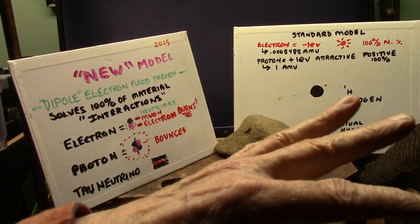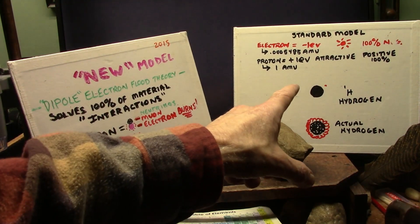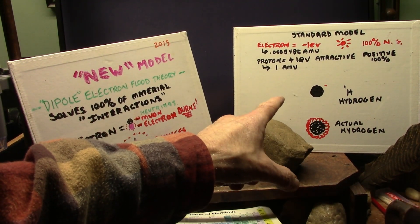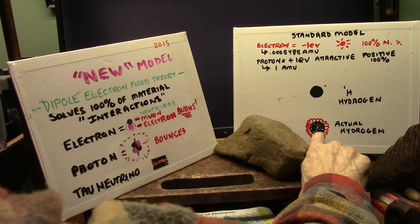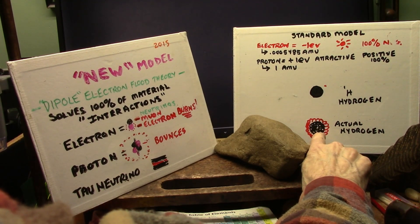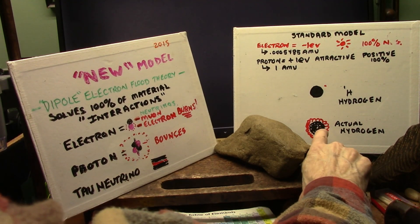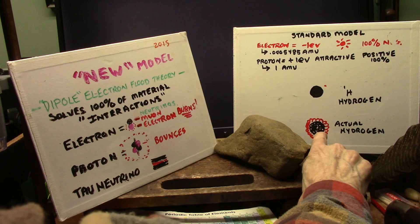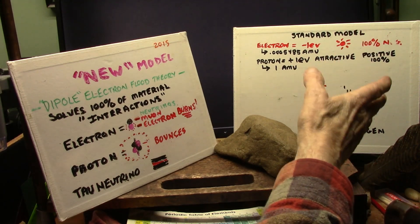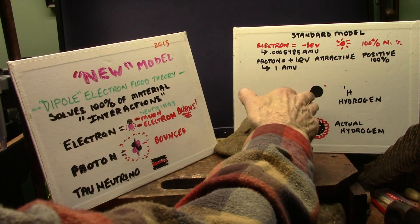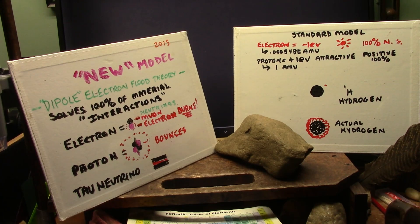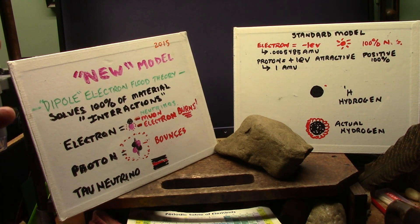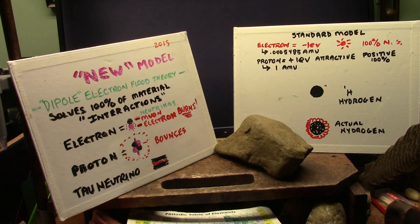This is the standard model. This is my model. Everything is a dipole. The cores of atoms are not positive — they are dipoles.